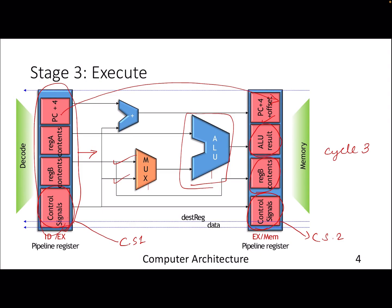The PC+4 has now become PC+4+offset because we now know exactly where to jump. The ALU result is latched, and the register contents are also latched because they may be needed later. Regarding control signals: at this point, the latch stores control signals for all remaining stages — execute, memory, and write back. By the memory stage latch, only control signals for memory and write back remain, since execute is already done. Visualize the pipeline as instructions moving left to right with latches storing updated content.